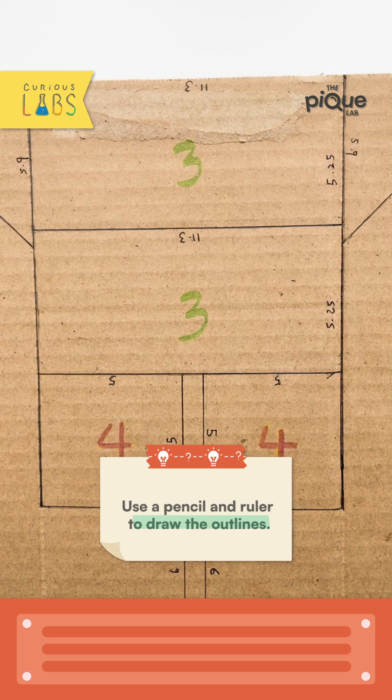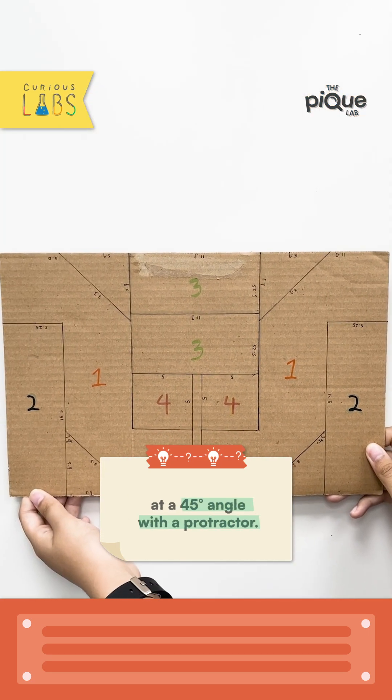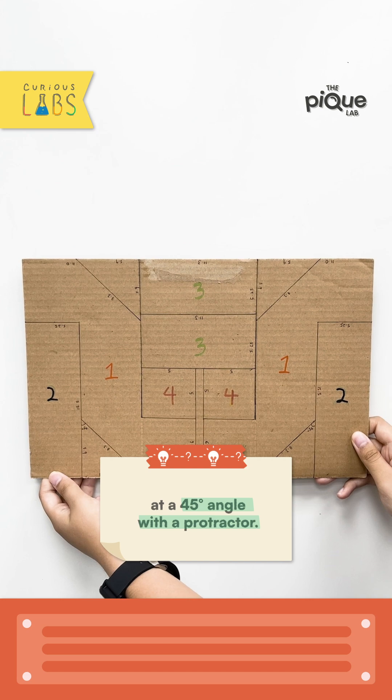Use a pencil and ruler to draw the outlines. Ensure the mirrors are positioned at a 45-degree angle with a protractor.